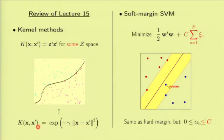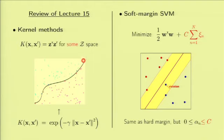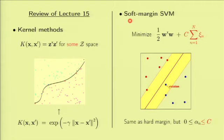However, it corresponds to an infinite dimensional Z space. By doing this, it's as if we transformed every point in the original two-dimensional space into an infinite dimensional space, carried out the SVM there, and then interpreted the solution back. This would be the separating surface that corresponds to a plane in that infinite dimensional space.